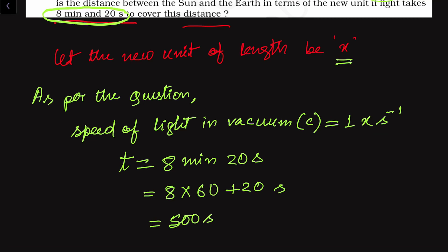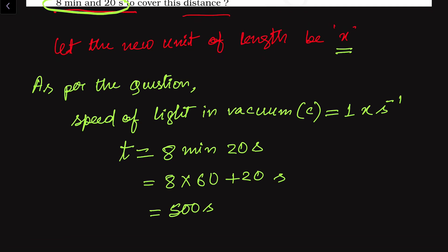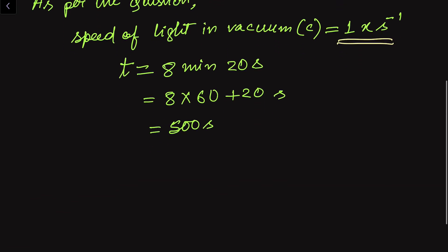So this much time is taken by the light to reach earth from the sun. Now we have the time taken by the light, and we have the new unit of system where unit of length is given by small x, and we have expressed the speed of light in terms of unity as per the question. Now the distance between the earth and the sun we have to find out. Distance is nothing but speed of light times time.